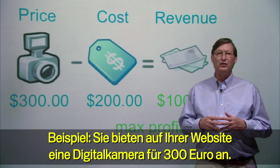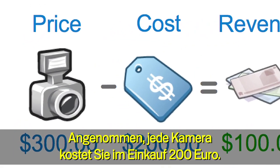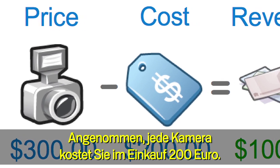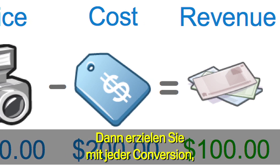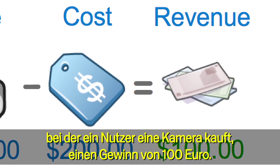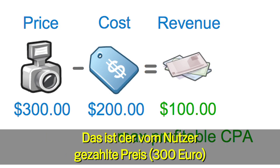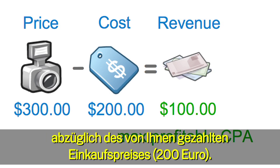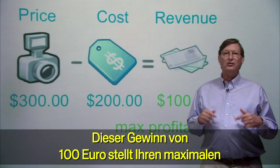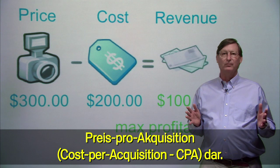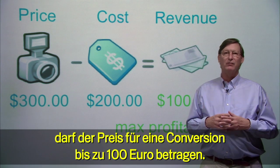You should be able to attribute a value to each of these conversions. For example, you may sell a digital camera on your site for $300. Let's assume that each camera has an additional wholesale cost of $200 to you. Therefore, a conversion for a user who buys a camera on your site generates $100 worth of revenue for you — that's the price a user paid, $300, less the cost to you, $200. That $100 revenue is your maximum profitable cost per acquisition, or CPA. You can pay up to $100 for each conversion and still make a profit on the sale.